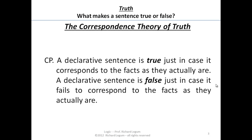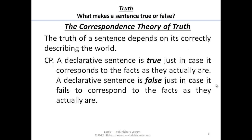The idea being that what makes a sentence true or false is whether or not it correctly describes the world. That is, the truth of a sentence depends entirely on whether it correctly describes the world. If it does, it's true, and if it doesn't, it's false. Seems pretty straightforward and non-controversial.